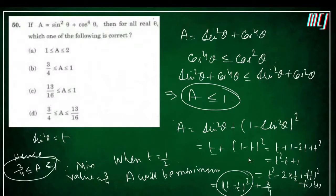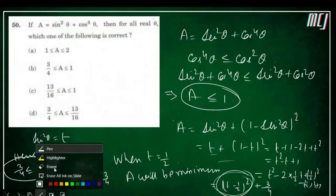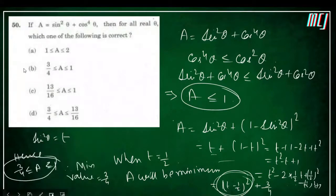For minimum-maximum problems like this, convert to quadratic form and then set the discriminant or complete the square. Answer is option B: 3/4 ≤ a ≤ 1.